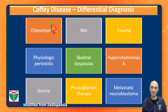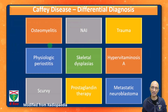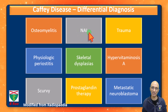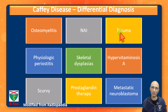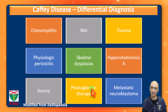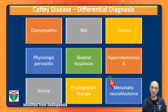Because of the clinical presentation of pain, swelling, fever, and elevated inflammatory markers, it can overlap with osteomyelitis. It is important to exclude non-accidental trauma in these patients. Other differential diagnoses would include trauma, physiological periostosis, skeletal dysplasia, hypervitaminosis A, scurvy, prostaglandin therapy, and metastatic neuroblastoma.